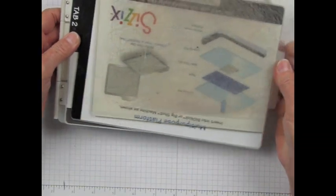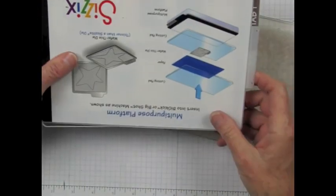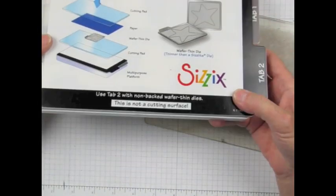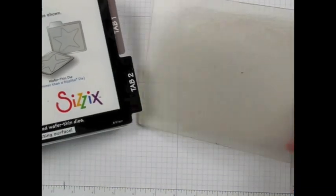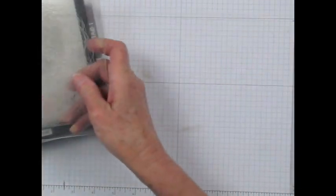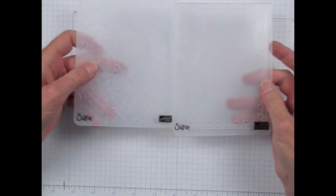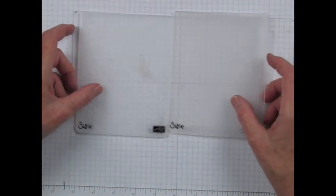So what you're going to need is a Big Shot and we're going to use the multi-purpose platform with Tab 2. You'll need only one cutting pad, and the embossing folders that you're going to use.